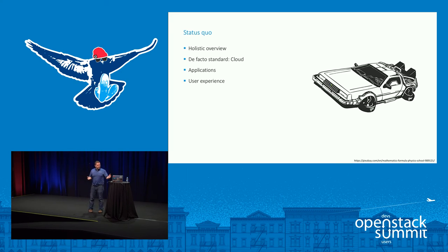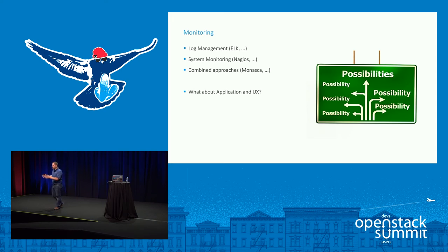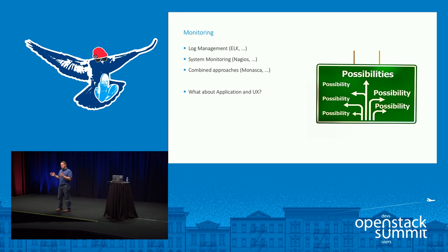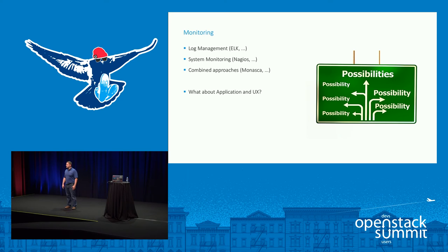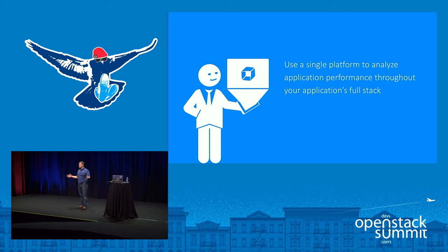To facilitate that monitoring need, there are several solutions out there. There's the log management area that only analyzes log files — because OpenStack writes a lot of them — like the ELK stack. Then there are system monitoring tools focused on resource utilization, like CPU and memory. There are some combined approaches like Monasca which combines both. But then, what about the applications and user experience? There is one tool that actually does that. We are now extending our application monitoring support to cloud platforms. We've long supported public cloud platforms like AWS and Azure, and now we're also supporting private cloud platforms like OpenStack.